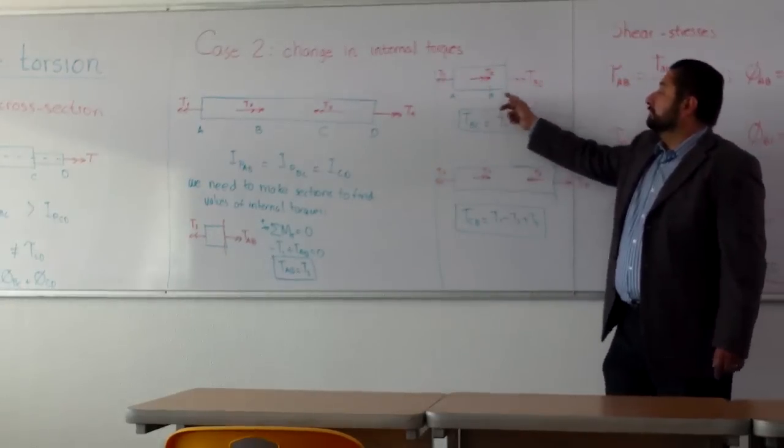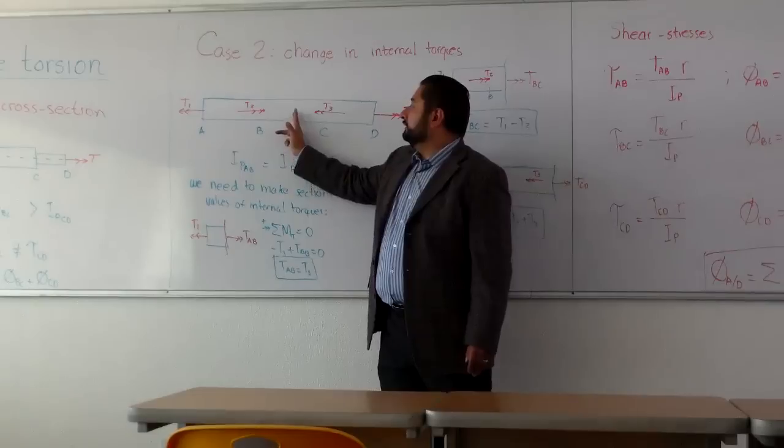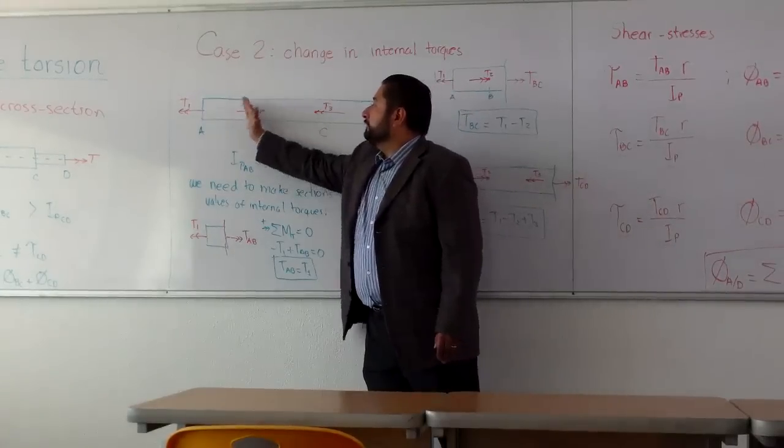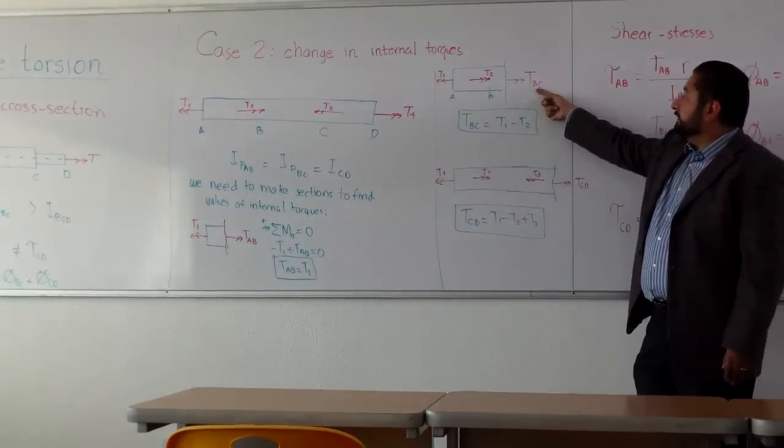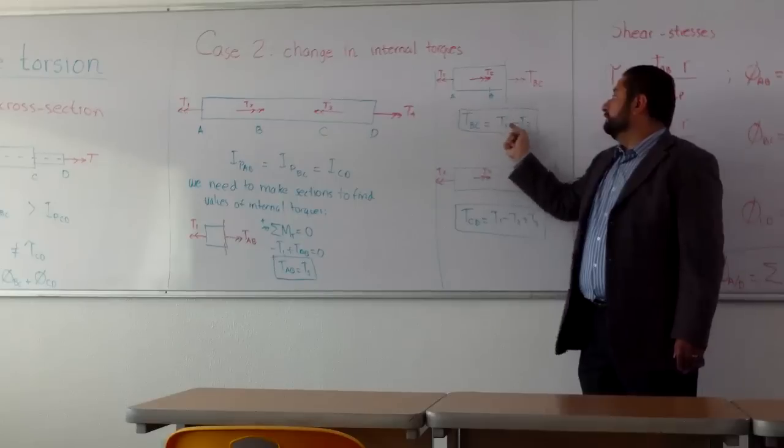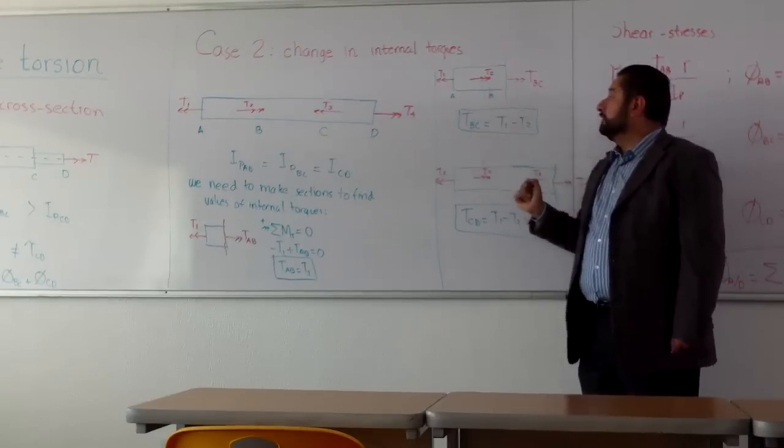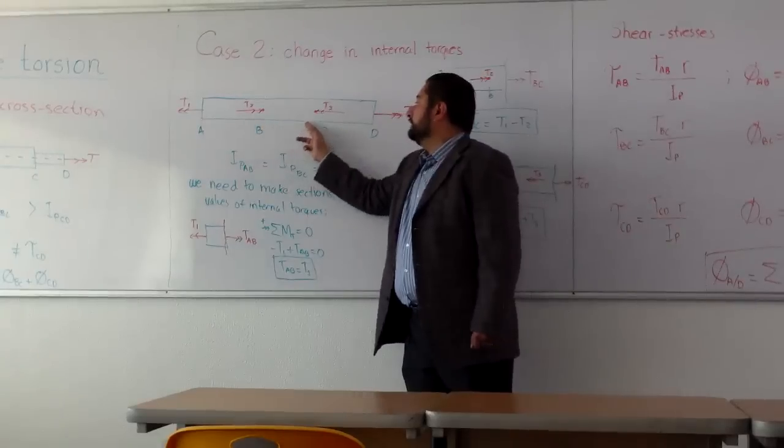For the second section, we include what we see when we cut here and we remain with the left hand side. We see the internal torque BC appearing. And by equilibrium, we know that this is equal to T1 minus T2. And this is the internal torque in the whole section B to C.